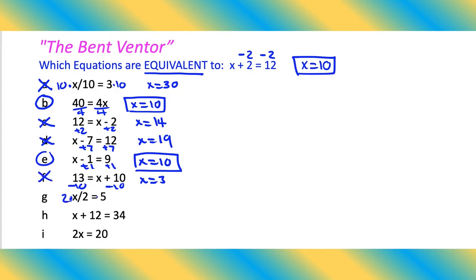Divide by 2, we would multiply by 2. Ooh, I think we got another winner here. x equals 10. There's an equivalent equation.